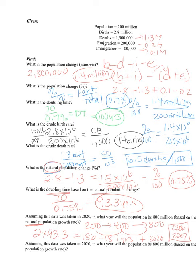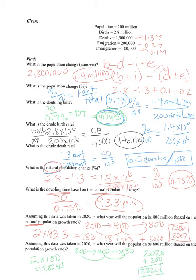The last question asks the same thing but based on overall population growth rate, not the natural rate. My doubling time was 100 years. Starting at 200 million: 200 doubles to 400, then to 800 — two doubles. Two times 100 = 200 years. Adding 200 to 2020 gives the year 2220. That's when the population is expected to reach 800 million based on population growth rate.